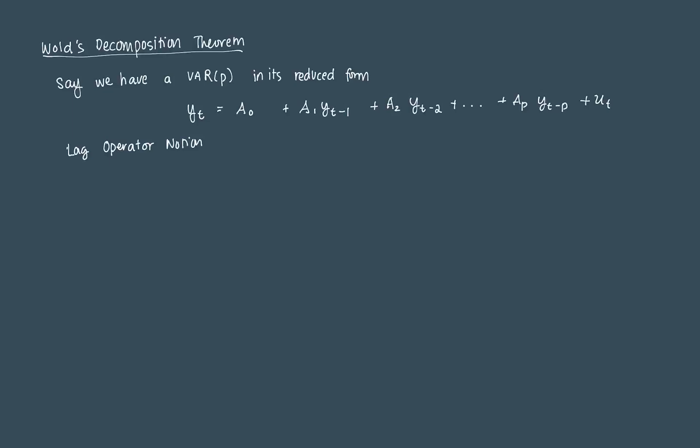We can express this in lag operator notation: IN or an identity matrix minus A1L because it's the first lag minus A2L squared because it's the second lag minus A3L cubed and so on until we get to ApLp times Yt. These denote the lag values of Yt and that's equal to A0 plus Ut. This is our lag operator notation form of our reduced form VAR.